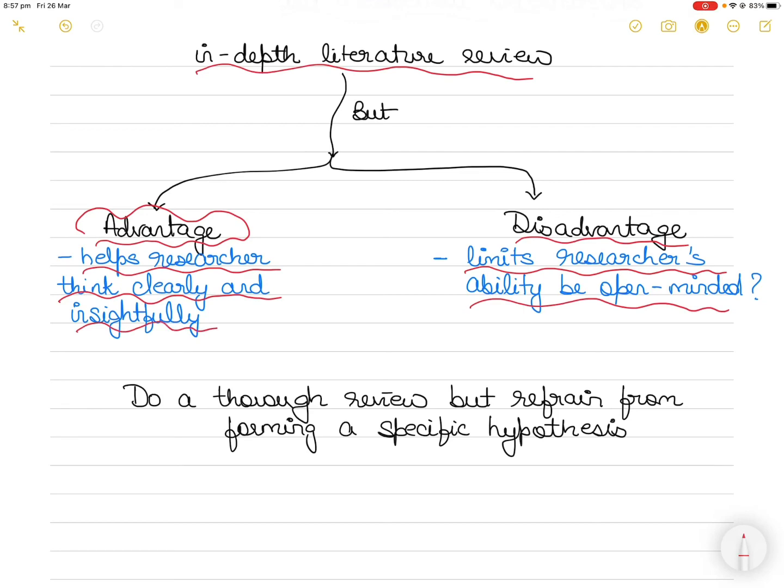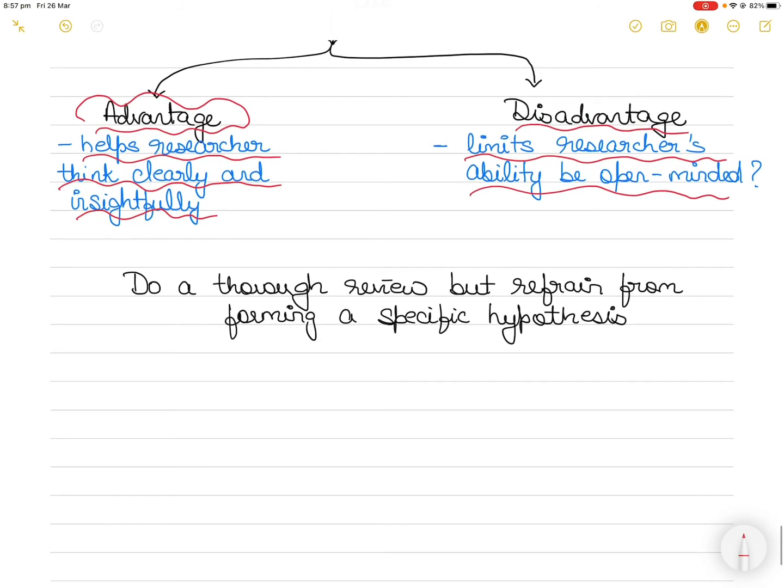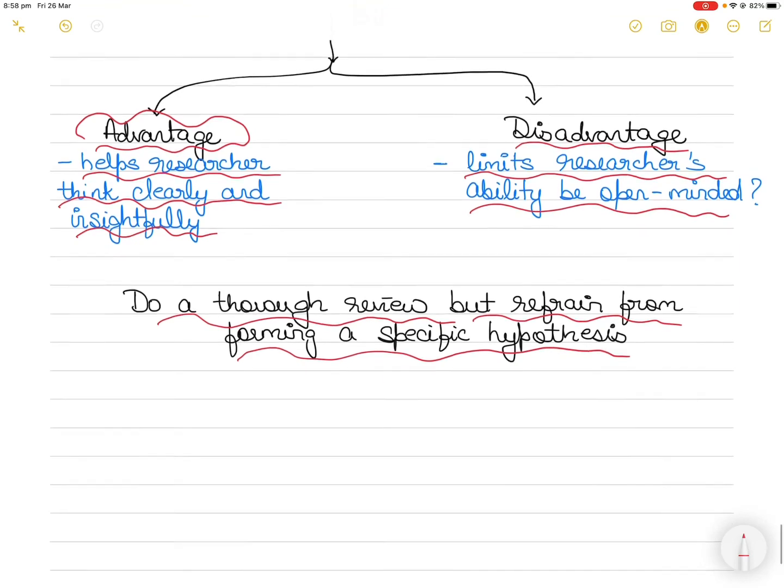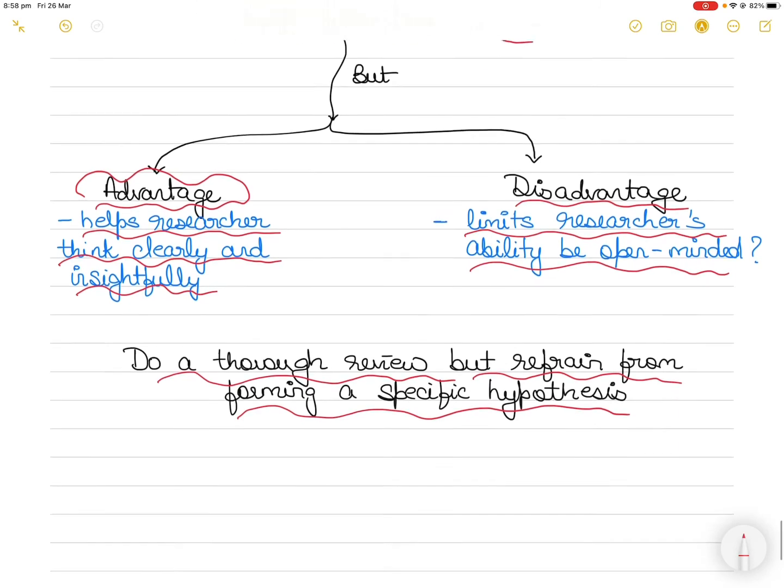So if you are feeling confused, my advice would be to learn as much as you can about your research topic, do a thorough literature review. However, refrain yourself from forming a specific hypothesis about what you may yourself find. So let the data reveal the concepts and the interrelationships. You do not make any assumptions just because you have read a lot about a certain phenomenon or a process.